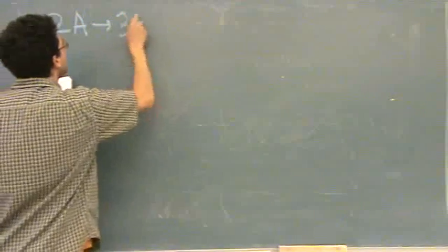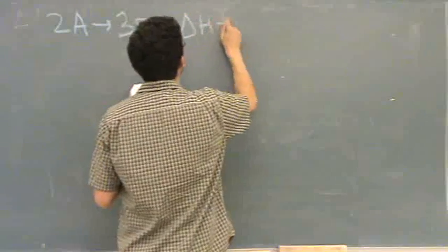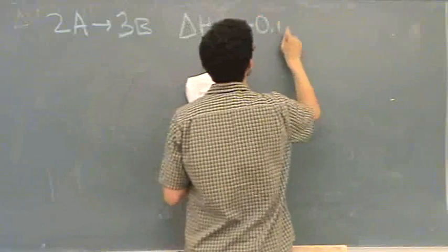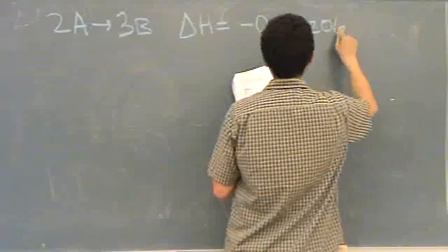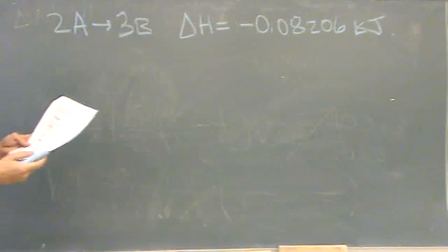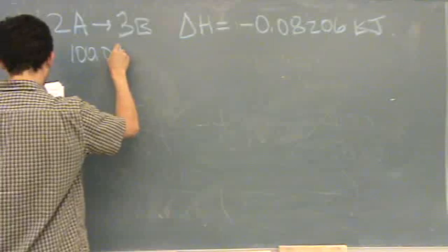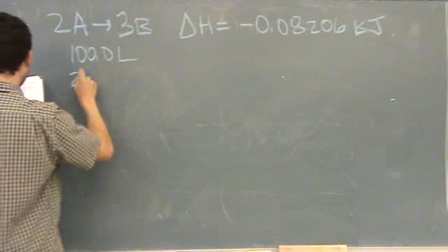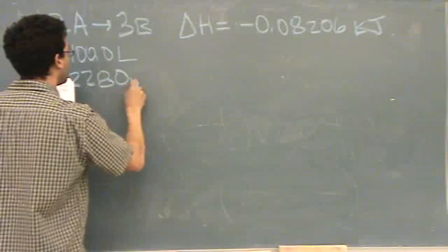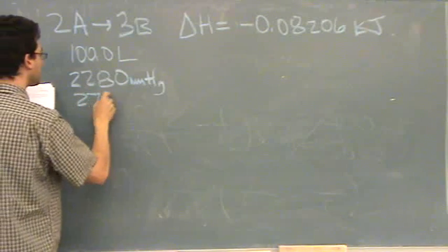Okay, spring 05, number 14. We have a reaction 2A goes to 3B. The enthalpy change is equal to minus 0.08206 kilojoules. What quantity of heat in kilojoules is liberated by the reaction if it's 100 liters of A, 2280 millimeters of mercury, and 27 degrees C?